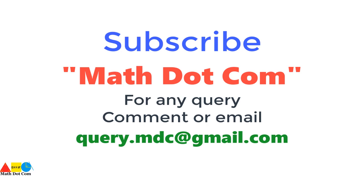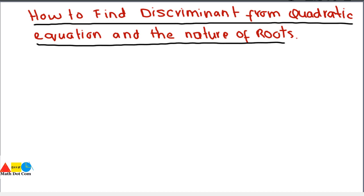Please subscribe to math.com; for any query, comment or email. Today's lecture is on how you can find the discriminant from the quadratic equation and the nature of roots, as we have already discussed in our previous lecture. We'll start with examples to show how you can find the discriminant and the nature of the roots.